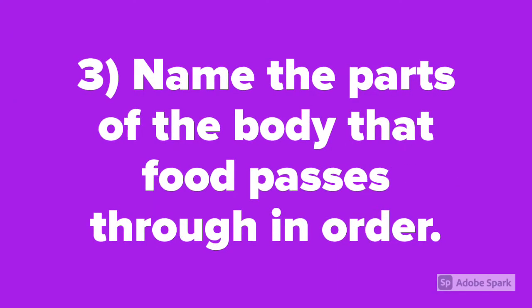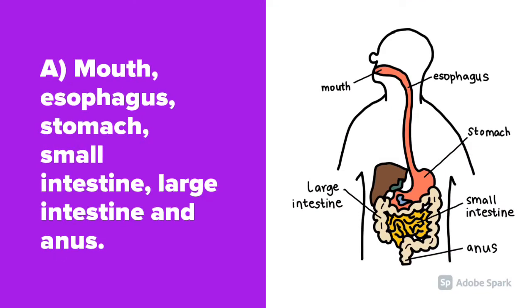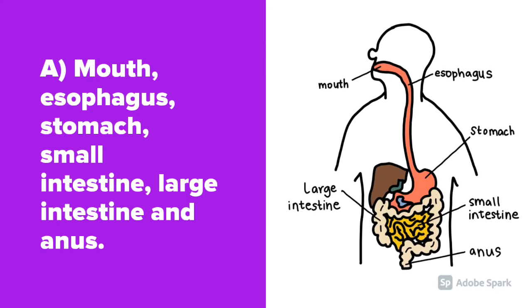Question number 3: Name the parts of the body that food passes through in order. The order is mouth, esophagus, stomach, small intestine, large intestine, and anus.